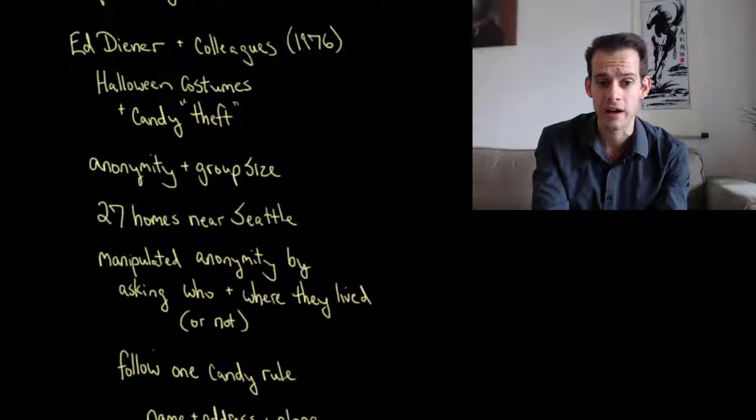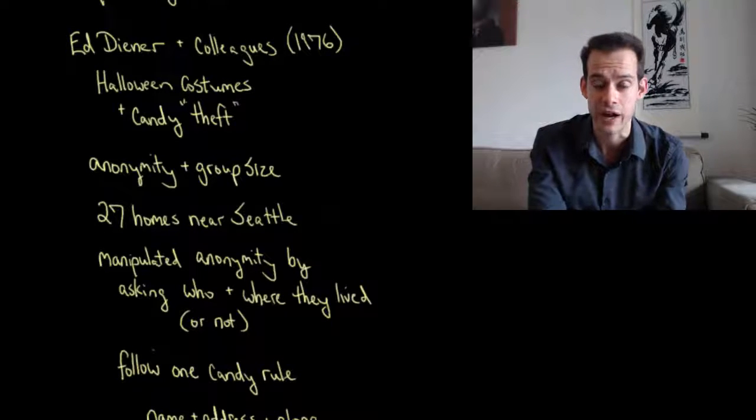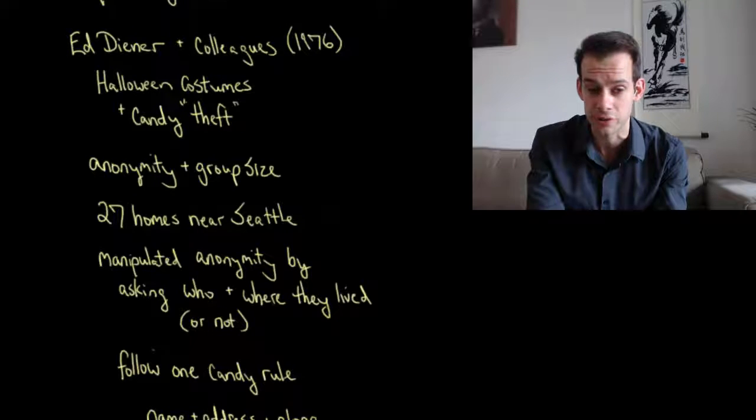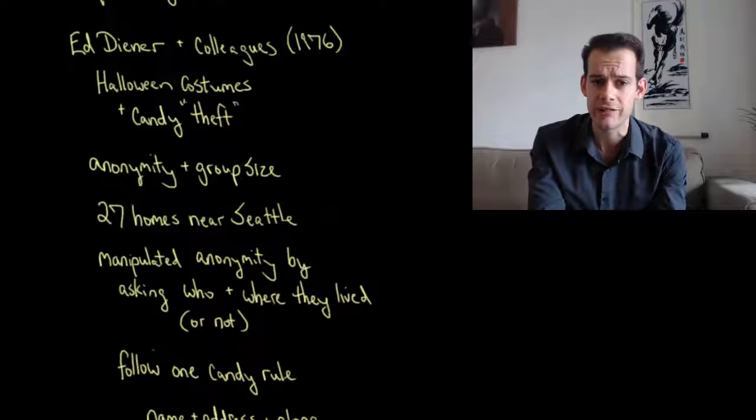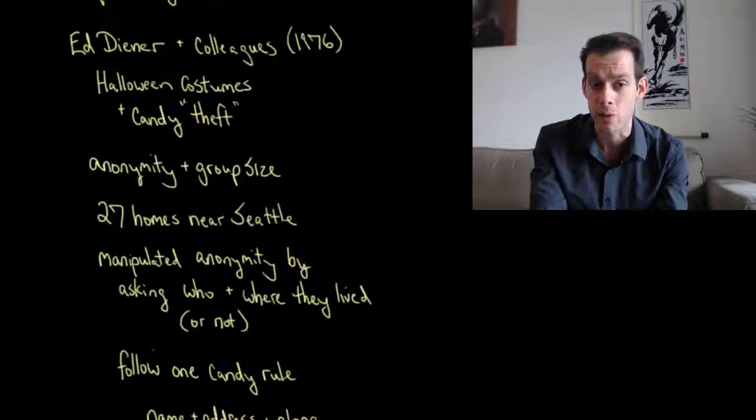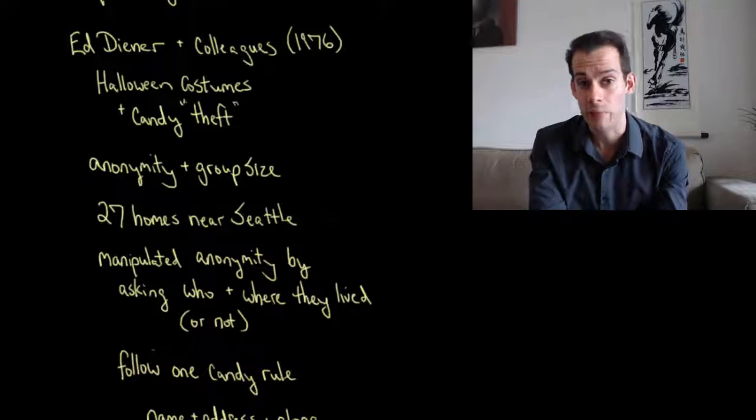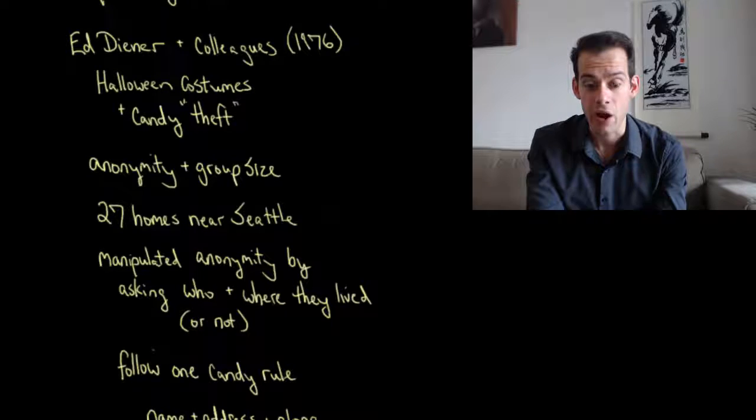What Diener and colleagues did was they used dozens of homes in the Seattle area and over the course of one Halloween night they observed over 1,300 children and they manipulated the level of anonymity that the children experienced while they were trick-or-treating.